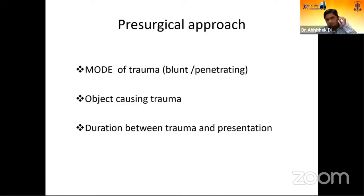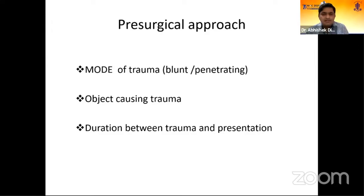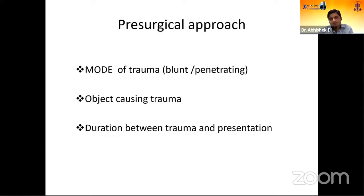When a patient comes to our clinic with a history of trauma and cataract, the three most important history points are: first, the mode of trauma — whether it was a blunt or penetrating injury; second, the object causing the trauma, because household materials like knives, pencils, or wood may carry fungal contamination, increasing the risk of fungal infection pre- and post-operatively; and third, the duration between trauma and presentation — whether it is an acute or chronic case.